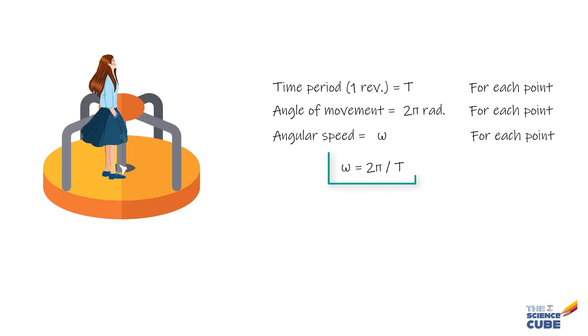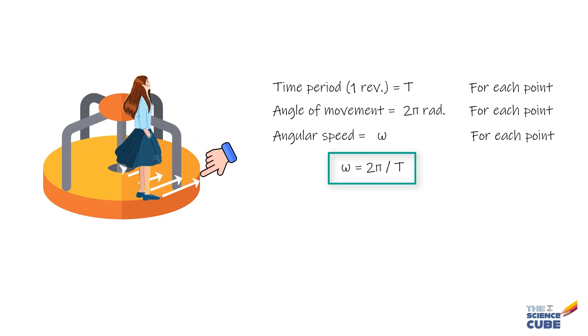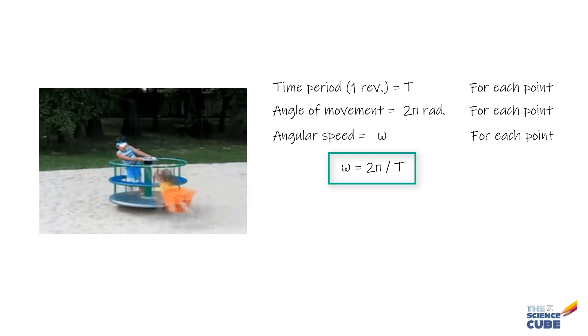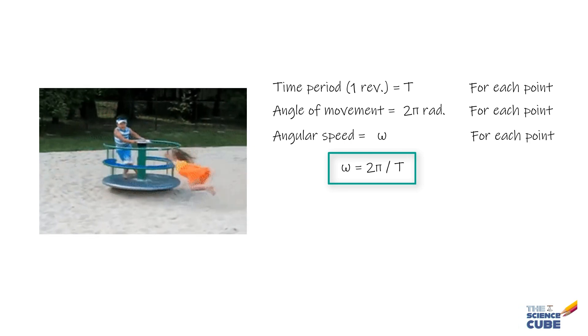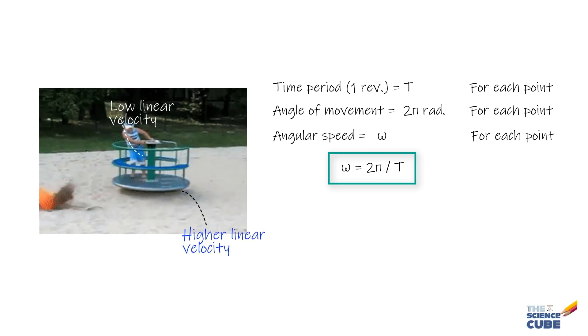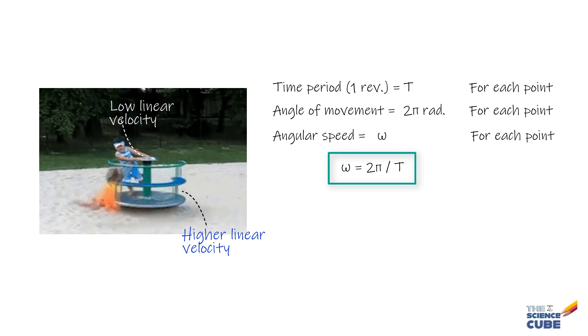If you have been on a merry-go-round, you will recall that as you move from the center towards the edge, your linear velocity increases noticeably. You can actually feel it because it is easier to stay put closer to the center than at the edge of the merry-go-round, even though the angular velocity remains the same at any radial distance.